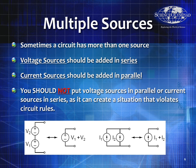Let's talk about multiple sources. Sometimes a circuit has more than one source. Generally, if you want to add two voltage sources, they add well in series. Current sources add well in parallel. V1 and V2 in series give an equivalent of V1 plus V2, and two current sources I1 and I2 in parallel can be added together. However, you should not put voltage sources in parallel or current sources in series, as this violates circuit rules and creates an invalid problem.